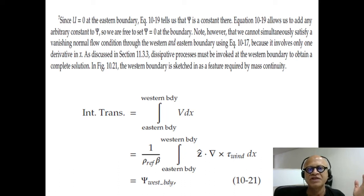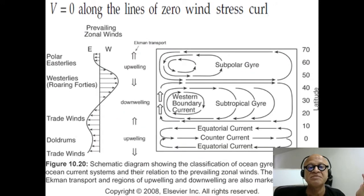If you know the wind stress, then you can compute the wind stress curl and compute the value of the stream function at the western boundary. Suddenly, we have a way of estimating the western boundary transport.